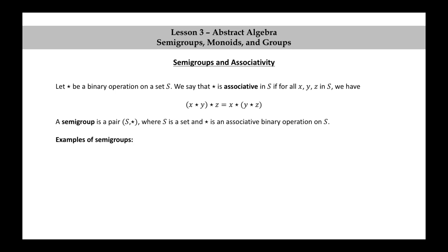Let's look at some simple examples of semi-groups. The natural numbers together with addition is a semi-group. The integers together with addition, the natural numbers together with multiplication, and the integers together with multiplication are all semi-groups because the given operation is a binary operation on the given set and the operation is associative in that set.